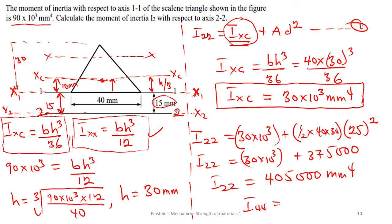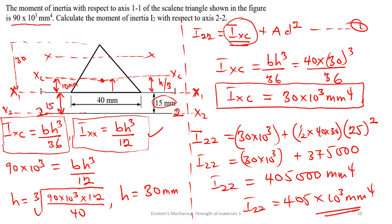Therefore, the moment of inertia about axis x2-2 is 405×10³ mm⁴. If you want to understand this more deeply, check out the episode where we discussed moment of inertia, then come to the examples. Thank you for watching. Please subscribe to the channel or drop your comments so that we will know what you need from us. Thank you.